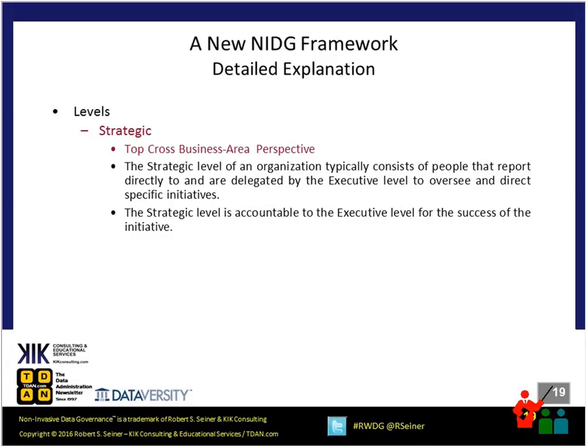The next level down is the strategic level. There are two levels of cross-business-area perspective we need to address within a data governance program, the first being the strategic level. The strategic level typically consists of the people the executive level puts responsible for running each of the business functions or areas of the organization — accountable to the executive level for the success of any initiatives, including the data governance initiative. You've likely heard the term data governance council — that's the group that resides at the strategic level.